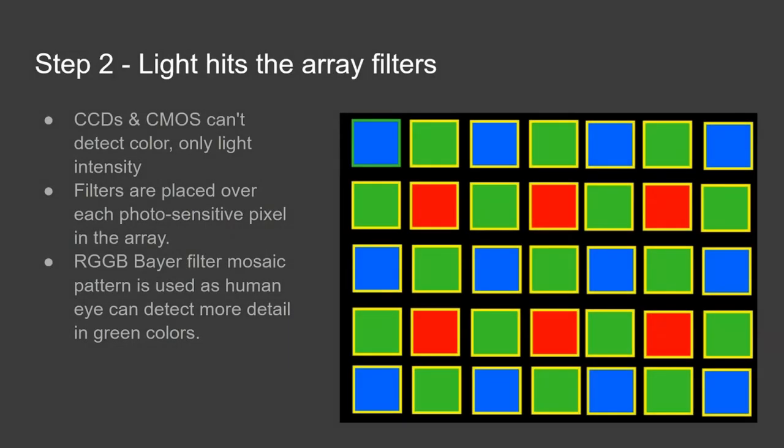Step two, light hits the array filters. So CCDs and CMOS can't actually detect color, they can only detect light intensity. So in order to record color data and color images we need to use a trick and the way we do this is we place filters, red, green and blue filters,